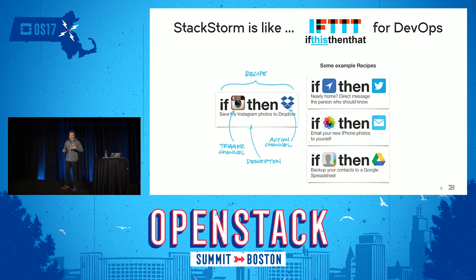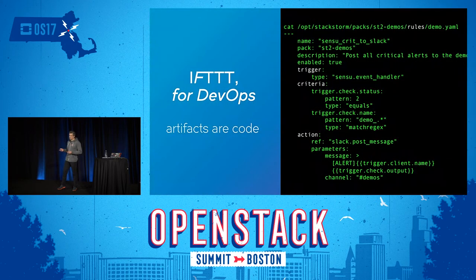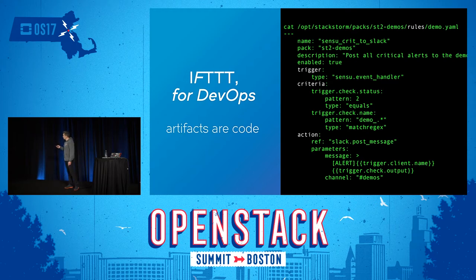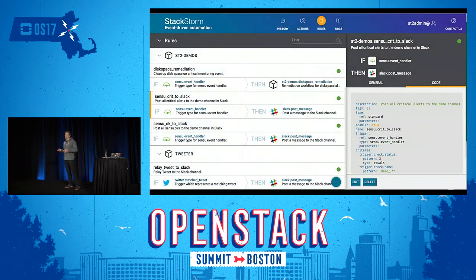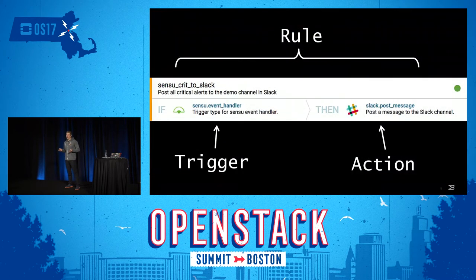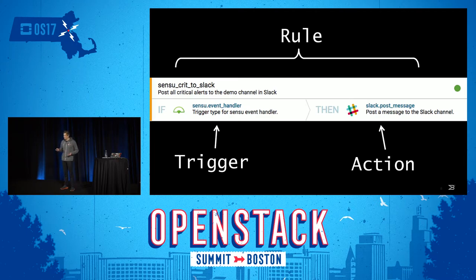Like in if-this-then-that, something happens and then you take some action. Because it is for DevOps, and in DevOps all the artifacts are code. There is a trigger — something happens, maybe a sensor or a Nagios event handler. Here is a criteria: the pattern matches. And here is an action: take some remediation. We have a nice UI that hammers home the same point. StackStorm is: if this happens, run this action.